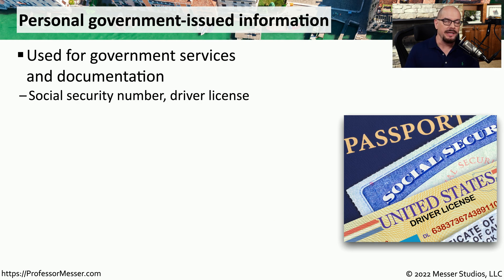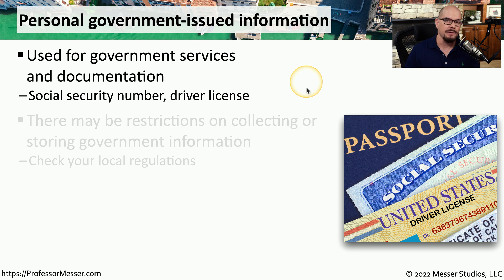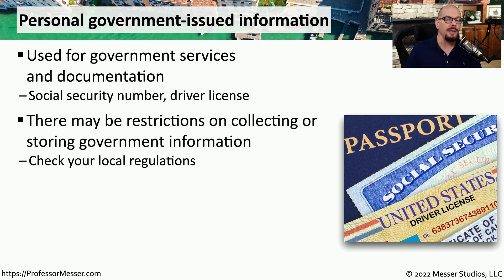Some of our private information is created or maintained by governmental agencies. For example, if you live in the United States, you probably have a social security number and a driver's license — those two pieces of documentation contain quite a bit of personally identifiable information, or PII. Because this is considered sensitive information, there may be laws and regulations on what a third party can collect from you. They may be able to reference your driver's license to confirm your age, but may not be able to store any information contained on that license.